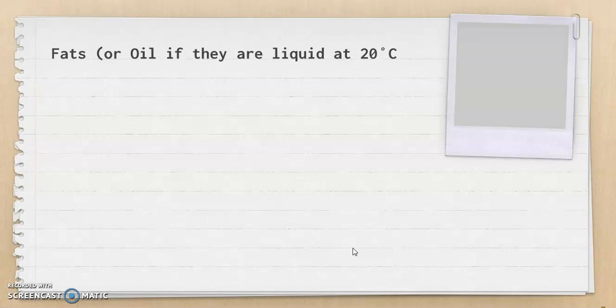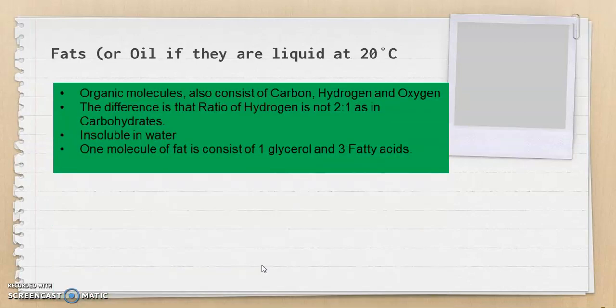Now we discuss the second type of biological molecule: fats and oils. Fats are solid at room temperature (20°C) and oils are liquid at 20°C. Although both are considered lipids, that is their key difference. They are also organic molecules, containing carbon, hydrogen, and oxygen — the same three elements as carbohydrates.